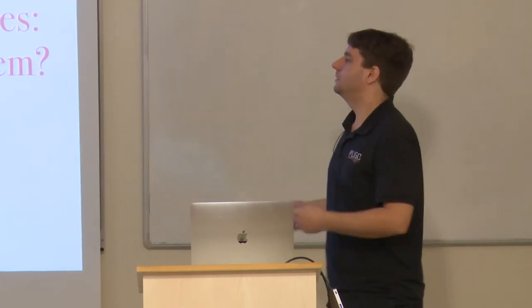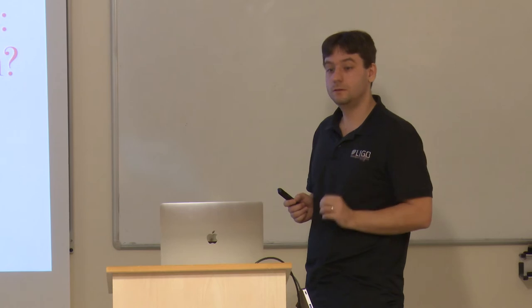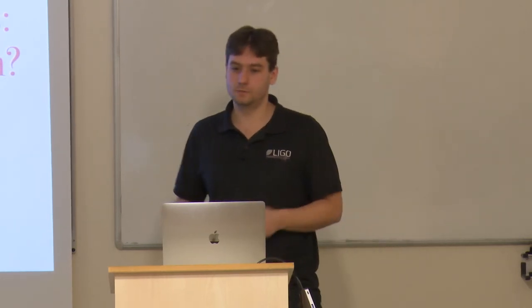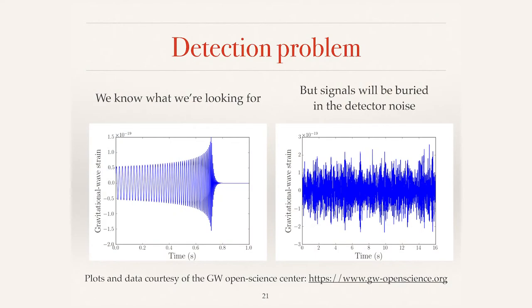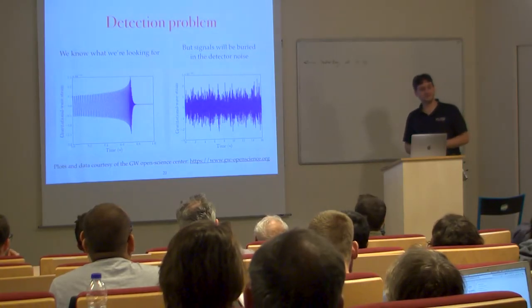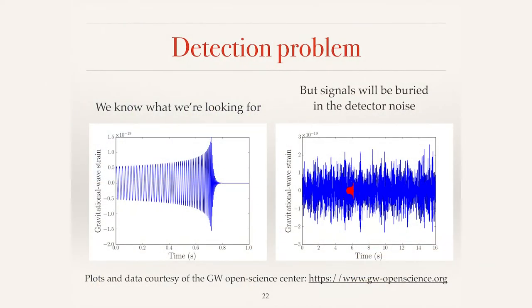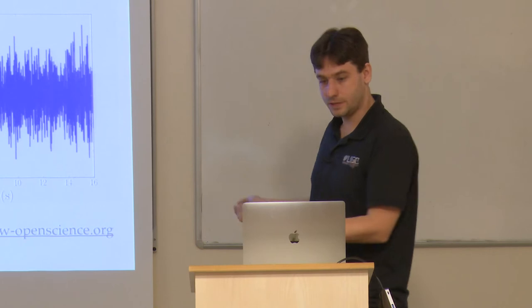Let's talk about the detection problem itself. We know what compact binary mergers look like — we have waveforms that model them — but these signals will be buried in detector data. Can you see the signal? There is one in there. This is basically an illustration of the problem we're trying to solve.